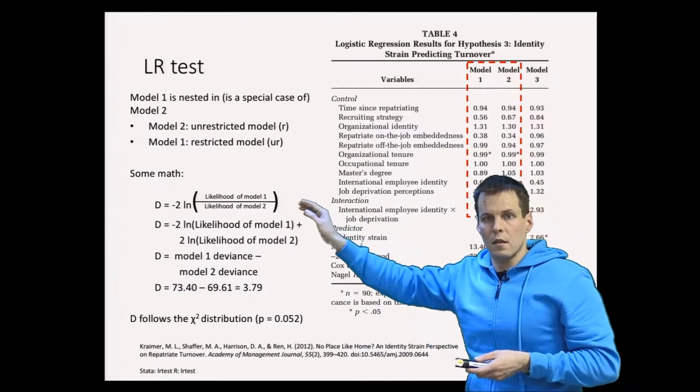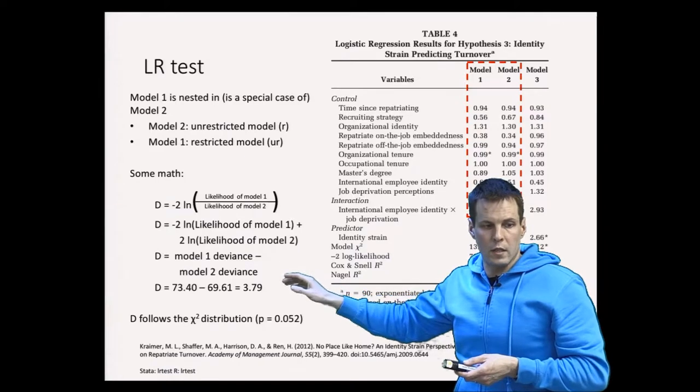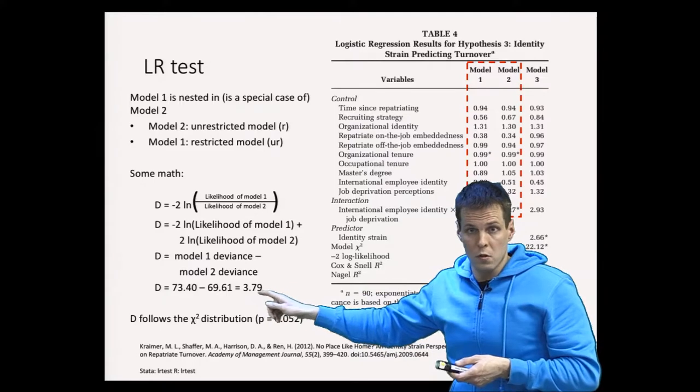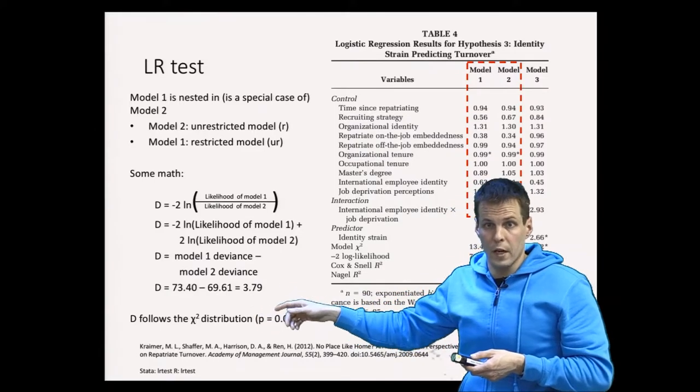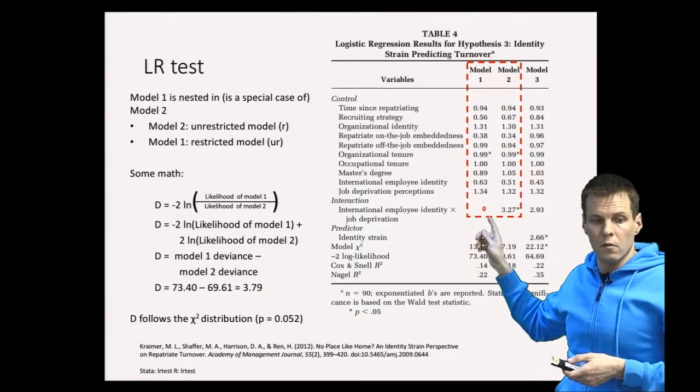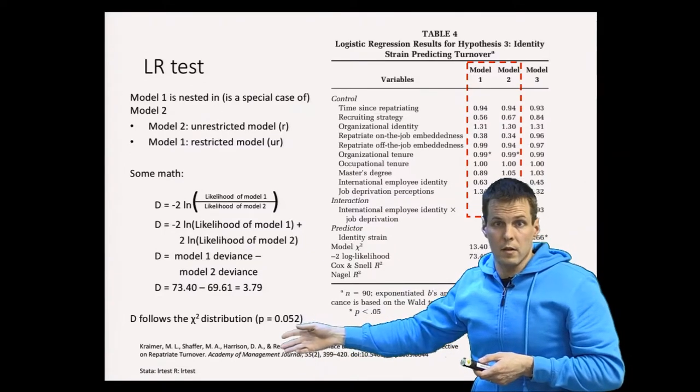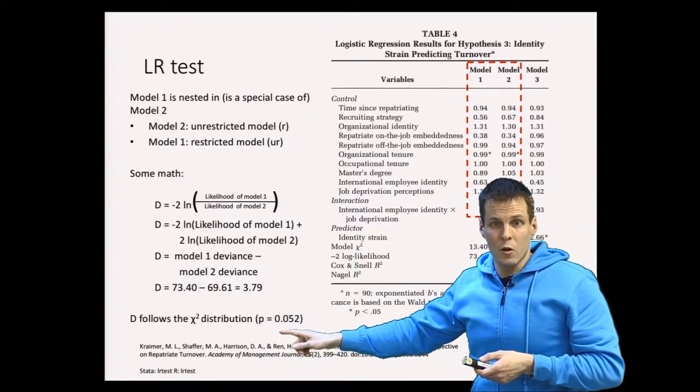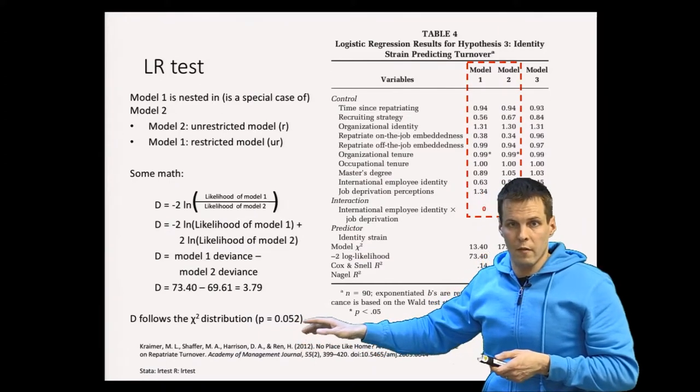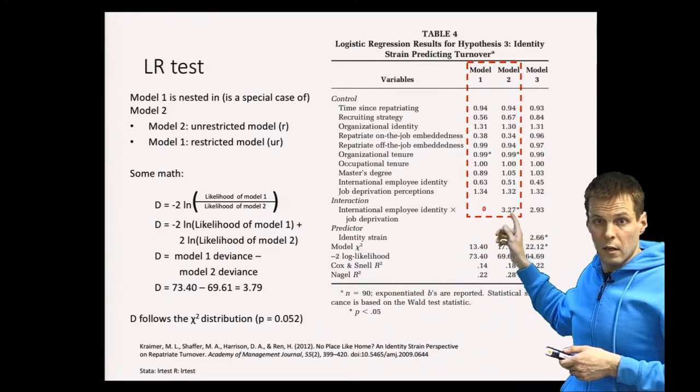We calculate the difference between the model deviances which is 3.79 and that difference follows the chi-square distribution with one degree of freedom because there is only one parameter difference here, and the p-value for that would be 0.05, which says that there is no statistically significant difference between the models. That's on the border of 0.05 level. And it's also shown here that this is not very significant here.